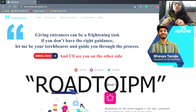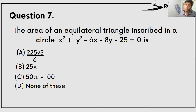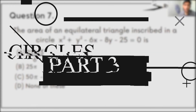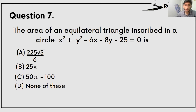You can use the coupon ROW2IPM to get 1000 off on your purchase. The next question is the 7th question: find the area of an equilateral triangle inscribed in a circle x² plus y² minus 6x minus 8y minus 25 equals 0.